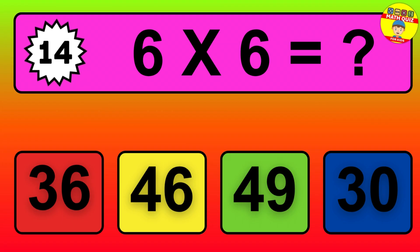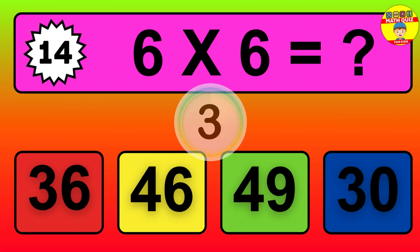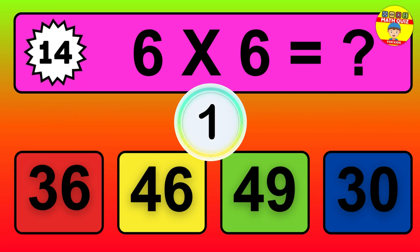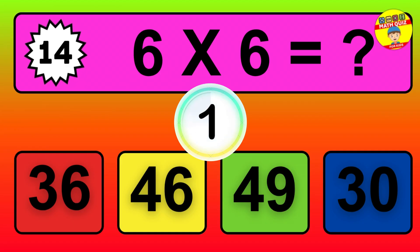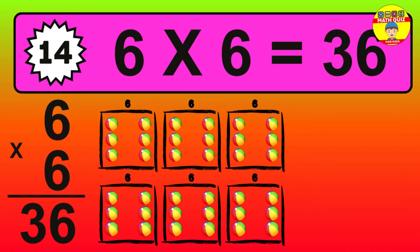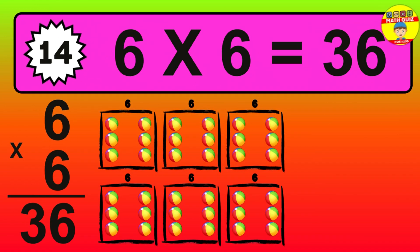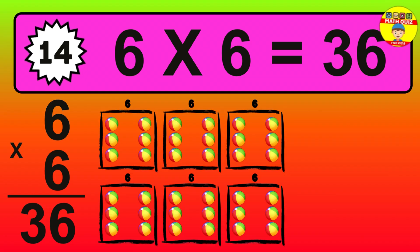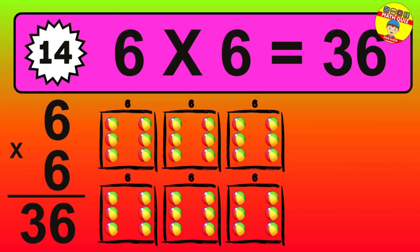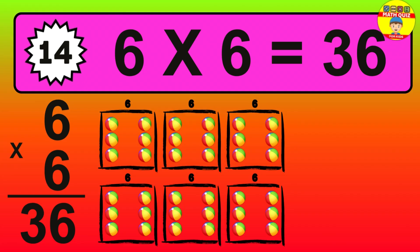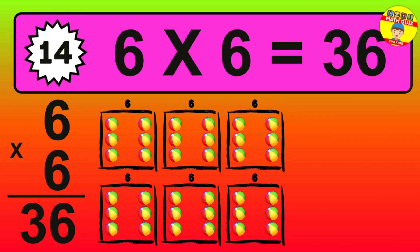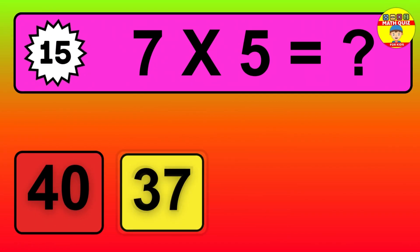Question 14. The answer is 6 times 6 is 36. To calculate, we have 6 groups with 6 balls each one. So, how many balls do we have?